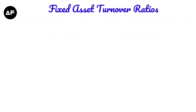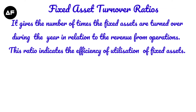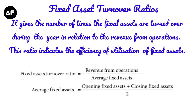Finally, the fixed asset turnover ratio shows how assets have been utilized to create revenue or income for the year. The formula is revenue from operations (sales) divided by average fixed assets, where average fixed assets equals opening fixed assets plus closing fixed assets divided by two.